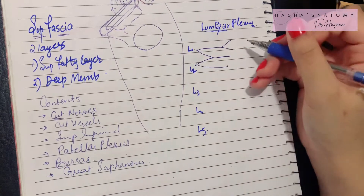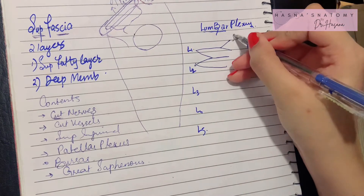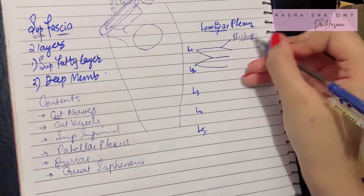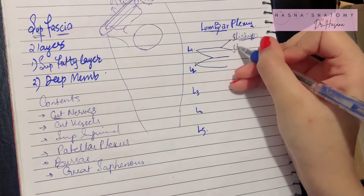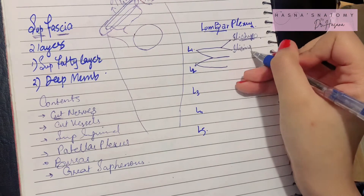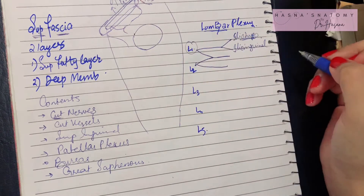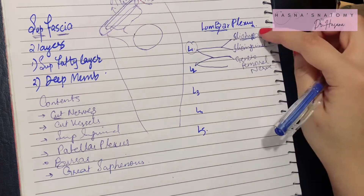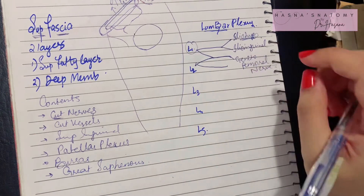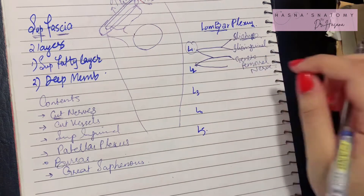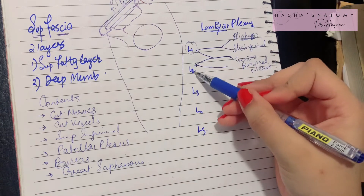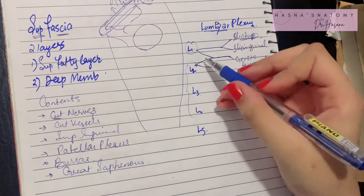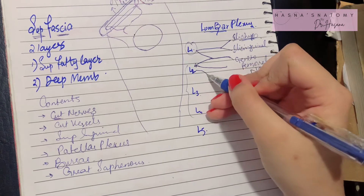Once you've done this, the labeling goes as follows: the first is the iliohypogastric nerve, then the ilioinguinal nerve carrying the root value L1, and from the M we have the genitofemoral nerve. These are very important nerves supplying the cutaneous part of your thigh. Then look at L2, L3, and L4 — these three are responsible for forming very important nerves.